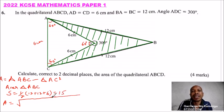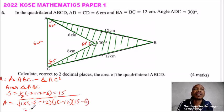So we get now the Hero's formula, so we say 15 into bracket 15 minus 12, then we have 15 minus 12, and we multiply by 15 minus 6, that is the Hero's formula, and you can use your calculator to be able to get that.